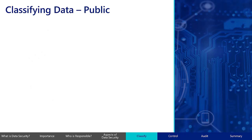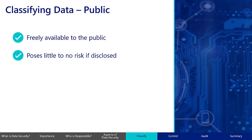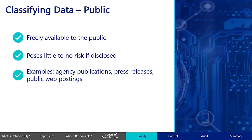Public data is information that can freely and without reservation be made available to the public. Data with a public classification typically poses little to no risk if disclosed, since public data is freely accessible by anyone. Some examples of public data include agency publications, press releases, or public web postings.